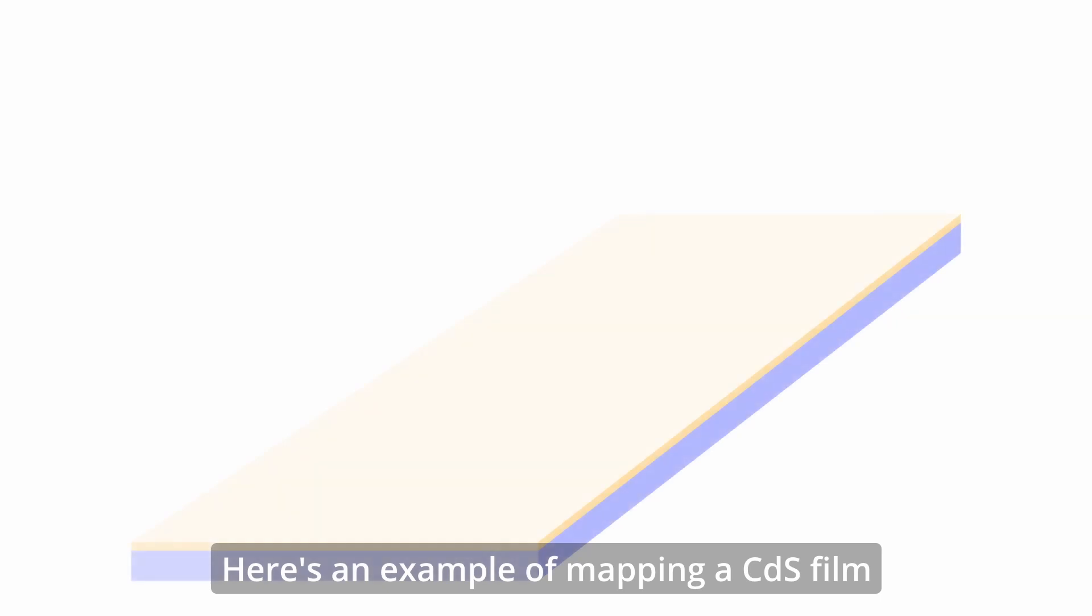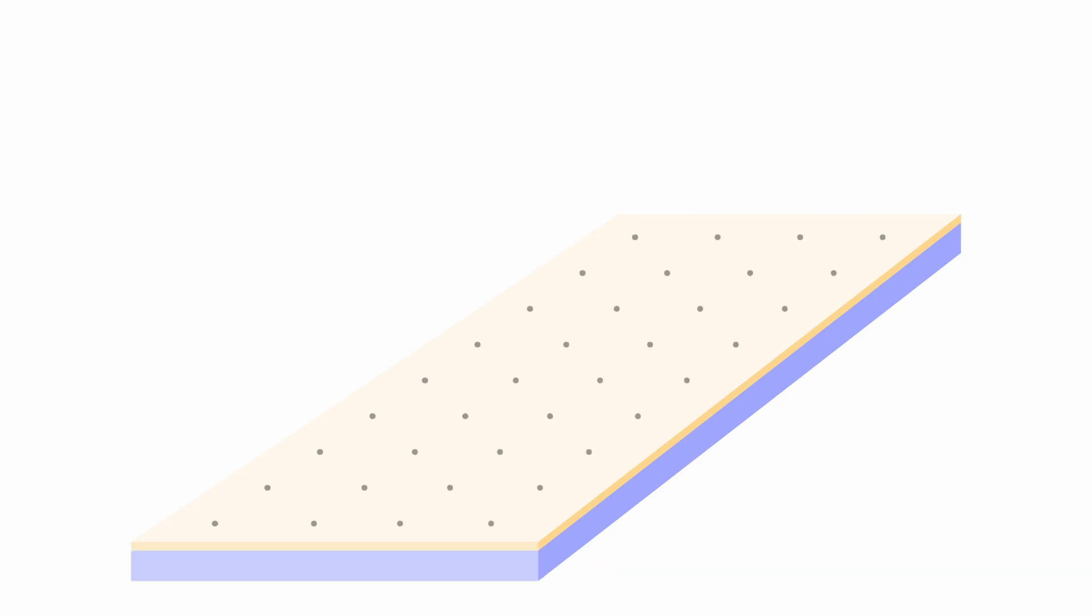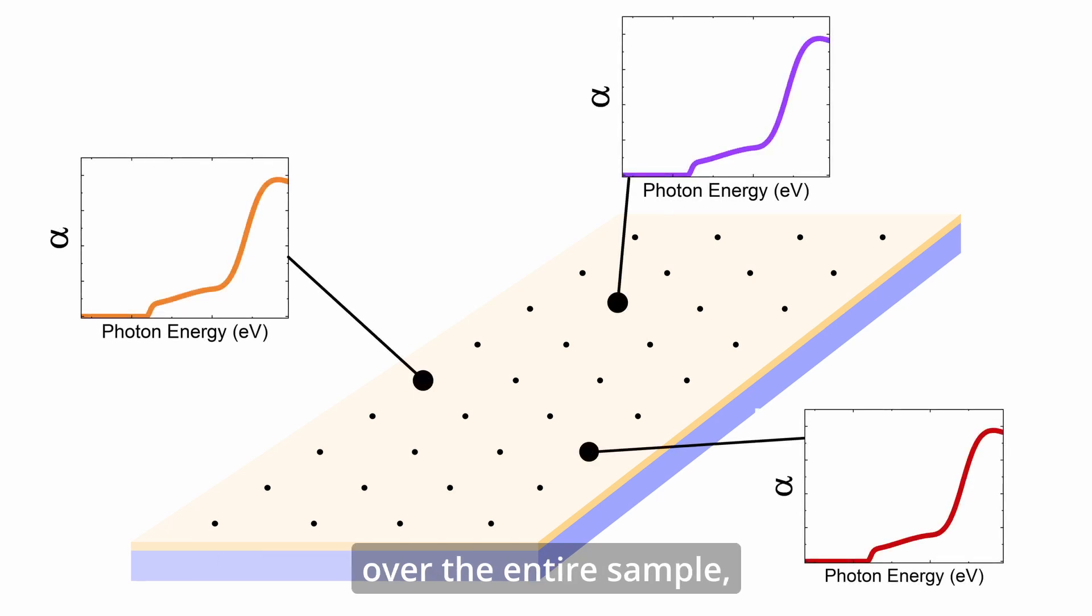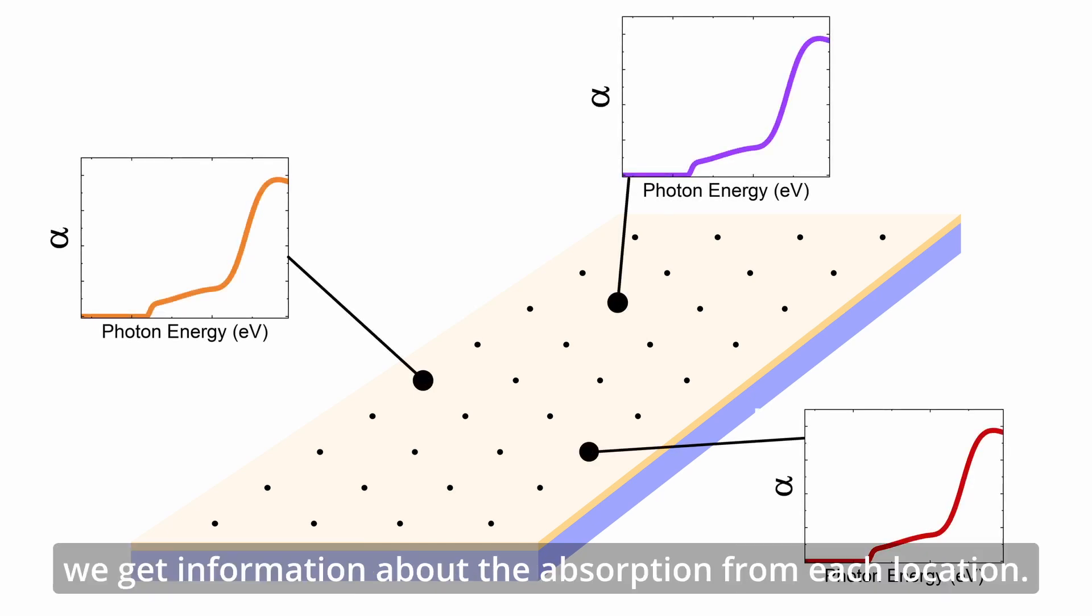Keeping with the solar example, here's an example of mapping a cadmium sulfide film, which, if you haven't figured out already, is a material that's used in some types of thin film solar. From ellipsometry measurements in a grid over the entire sample, we get information about the absorption from each location.